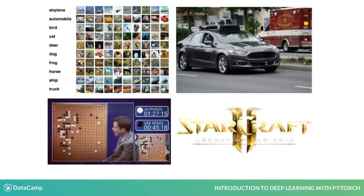You might have heard of successes of image classification, machine translation, autonomous driving, AlphaGo, or computer bots defeating professional players in StarCraft. All of these technologies have been empowered by neural networks, another name for deep learning.